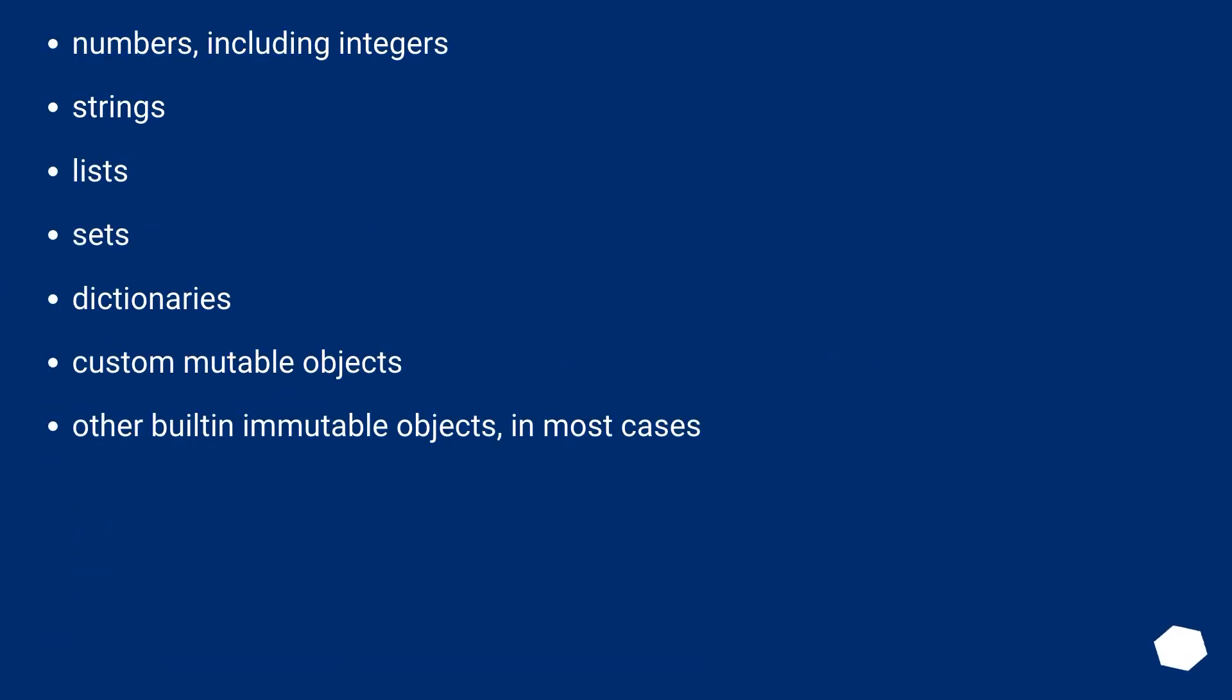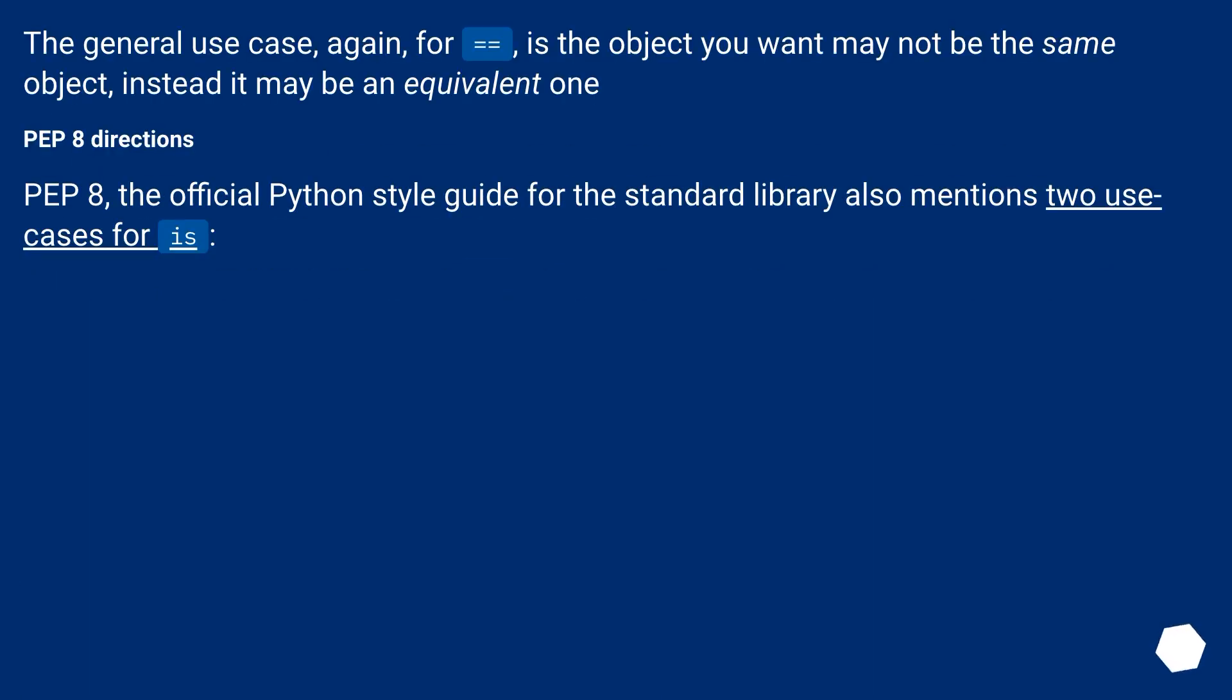Usual use cases for equals equals include numbers including integers, strings, lists, sets, dictionaries, custom mutable objects, other built-in immutable objects in most cases. The general use case, again, for equals equals is the object you want may not be the same object, instead it may be an equivalent one.